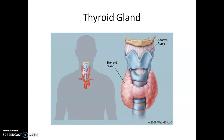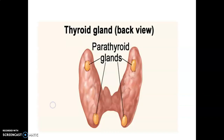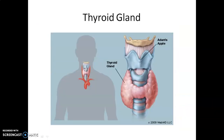Iodine is essential for the normal rate of hormone synthesis in the thyroid. Deficiency of iodine in our diet results in hypothyroidism and the enlargement of thyroid gland, commonly called goiter.